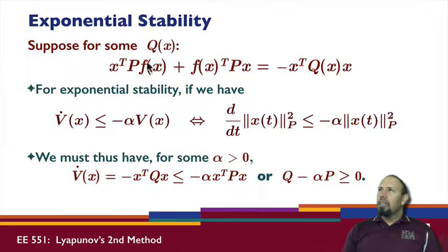We can also look at exponential stability. Suppose that we have this quantity here. Again, we're able to factor our derivative along the system trajectory this way. For exponential stability, exponential stability basically requires that V dot of x be less than or equal to some constant times V of x. Notice that if V of x is positive definite, then this quantity is negative definite, and so we actually have that relationship.